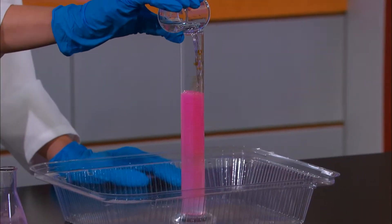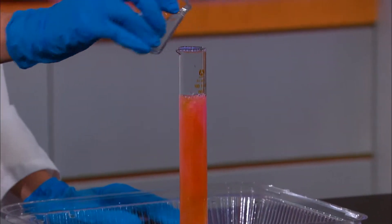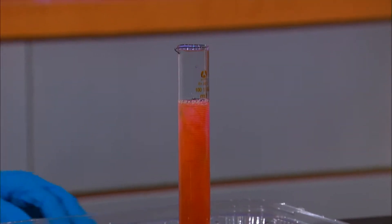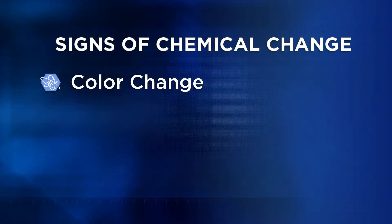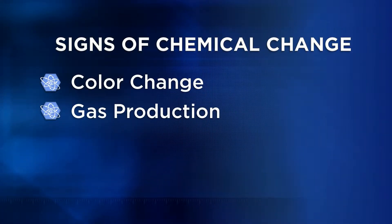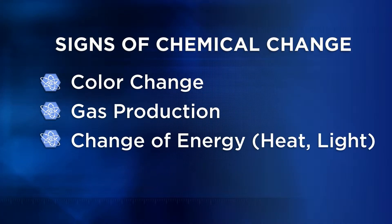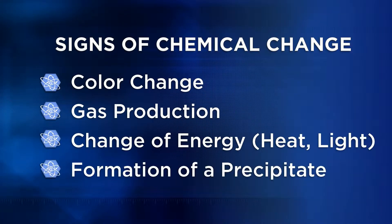In Unit 5, we observed the primary signs of a chemical change: color change, gas production, production of heat, and the formation of a precipitate.